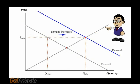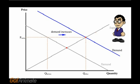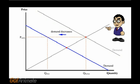When more is bought at the same price, demand, rather than quantity demanded, is said to have increased. When less is bought at the same price, demand, rather than quantity demanded, is said to have decreased.